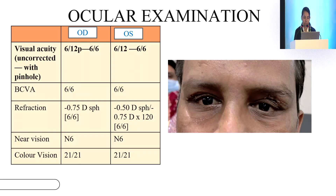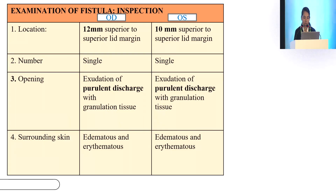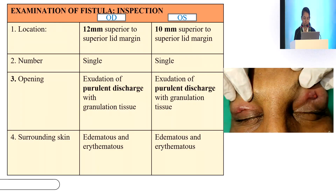On ocular examination, in the right eye the visual acuity was 6/12 partial and in the left eye 6/12, and best corrected visual acuity was 6/6 in both eyes with near vision and color vision maintained. Examination of the eyebrows, lacrimal apparatus and eyelid were within normal limits. Regurgitation test was negative and syringing showed patency in both eyes. Orbital examination was within normal limits except for the left eye which showed mild inferior dystopia. A fistula was seen in the right eye 12 mm superior and in the left eye 10 mm superior to the superior lid margin, which showed exudation of purulent discharge with granulation tissue, and the surrounding skin was edematous and erythematous as shown in the picture.